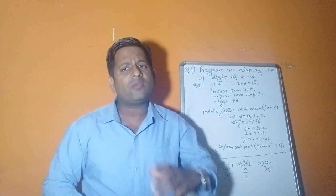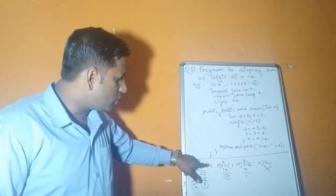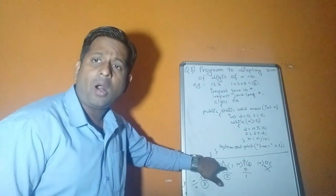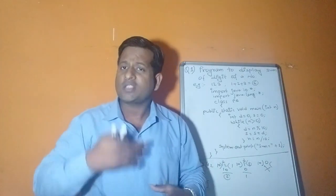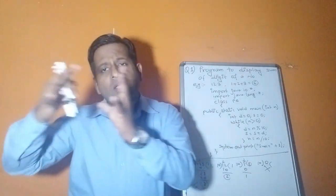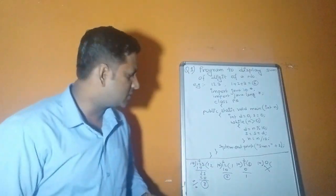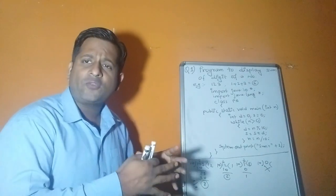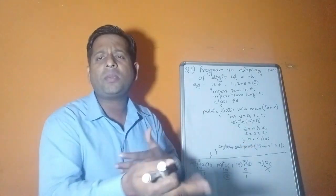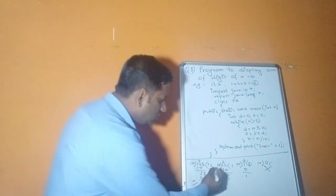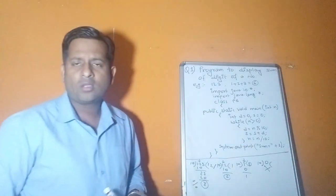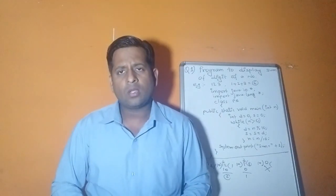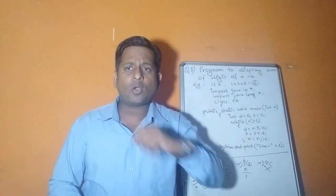The modulus operator is used to take out the remainder from a division. The number is also changing — 123 is replaced by 12. To get the quotient (to reduce the number), we divide by 10 using the slash operator. So both slash and percentage operators are used here.